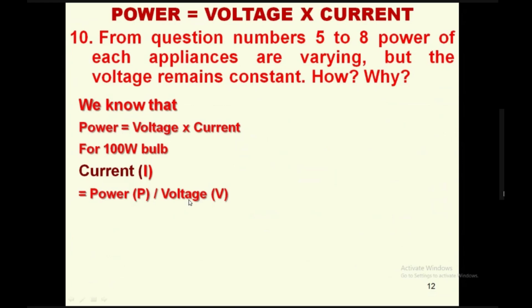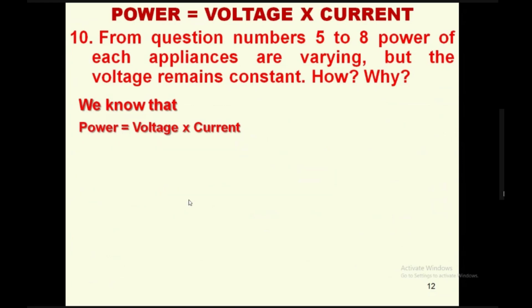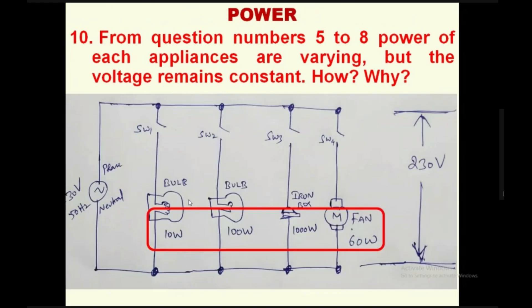Since power is fixed and voltage is fixed for each appliance, we can calculate the current flowing through each. For a 100-watt bulb, current I = Power / Voltage = 100 / 230 = 0.434 amps, which is 434 milliamps of current flowing through the 100-watt bulb.